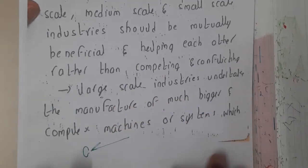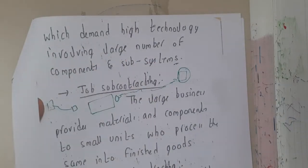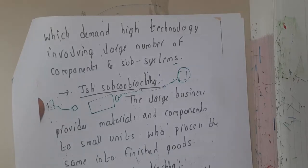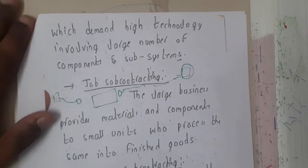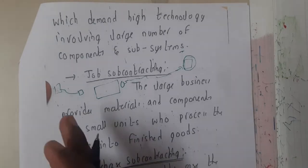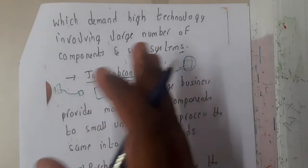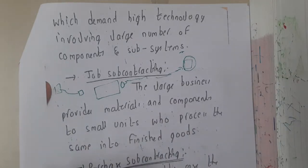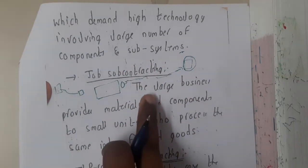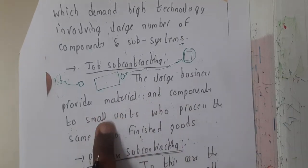Similarly, large scale industries undertake the manufacturing of big components in large numbers and large capacities. The first type of linkage between them is job subcontracting. Assume that you are the owner of a large scale industry. The large business provides materials and components to small units who process them into finished goods.